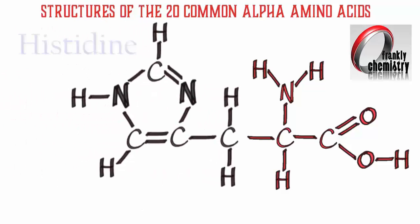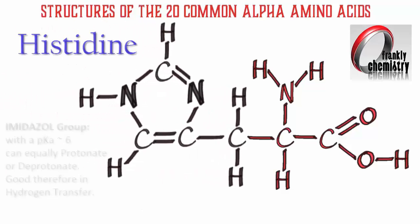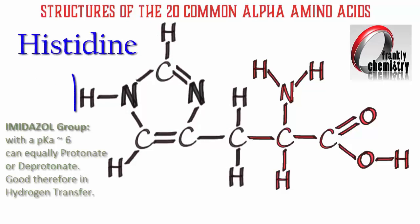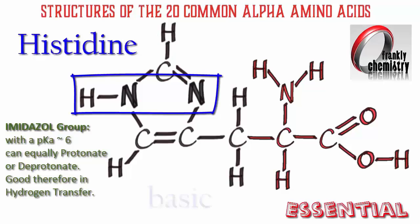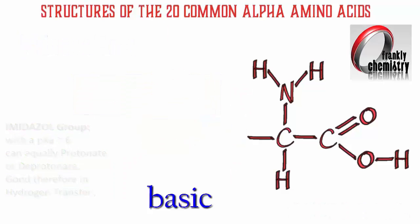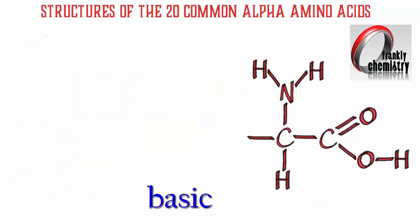Last but by no means least, we have histidine with its rather unusual R group. It has a pKa value of 6, meaning it can equally protonate or deprotonate, which makes it good for hydrogen transfer processes in metabolism. It's an essential amino acid and also basic because of those nitrogens, which each have a lone pair of electrons allowing them to accept a proton and behave as a Brønsted base.